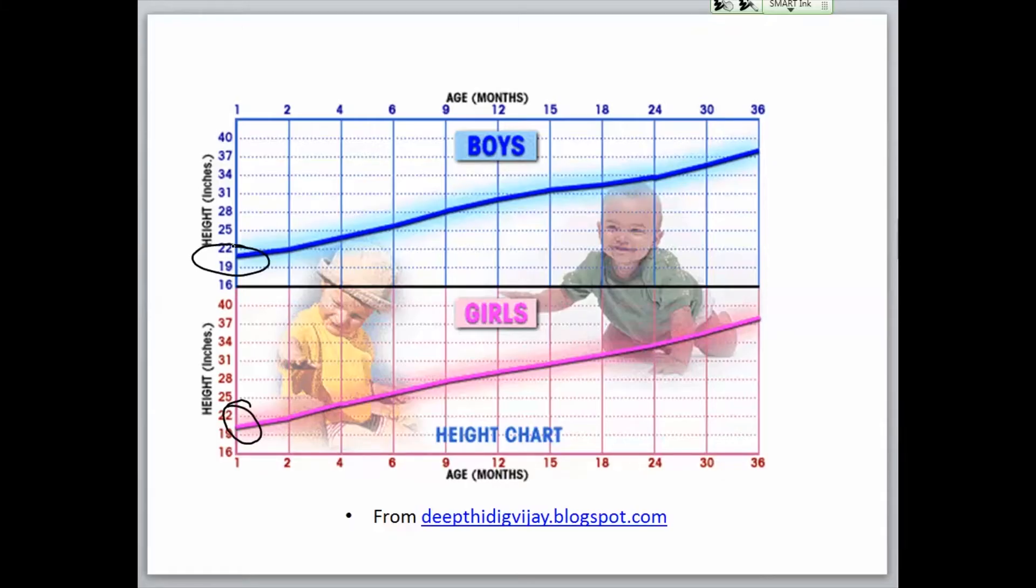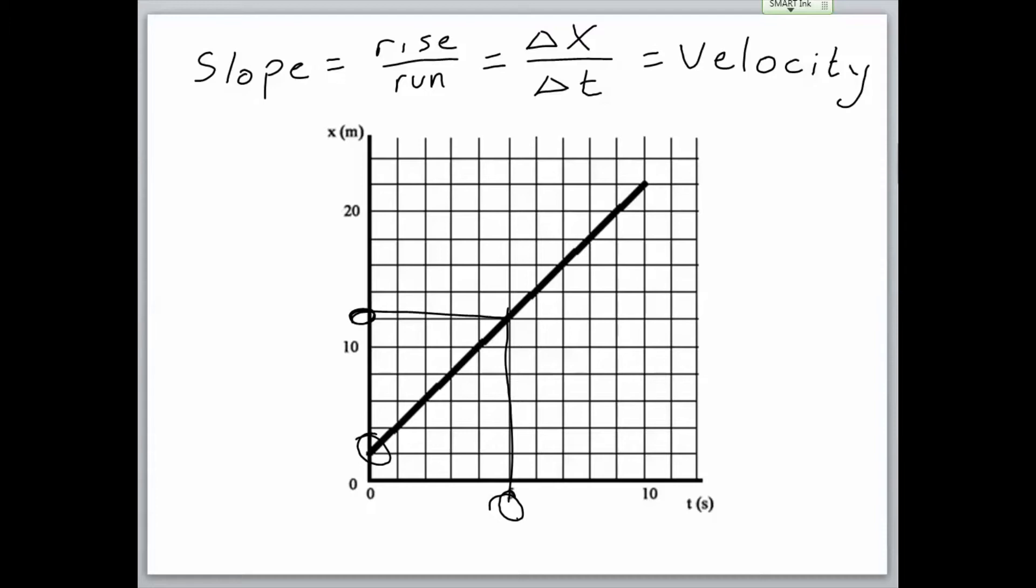So we can actually see a lot more from a position graph than you might originally think. We can see the position of the object over the given times. We can figure out the velocity from the slope of the line, and we can tell the initial conditions, or that starting position of the object, by looking at the y-intercept.